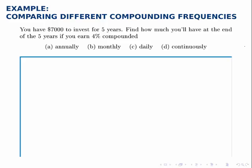In this example, we're going to compare four different accounts. Say we have $7,000 to invest for five years, and all four accounts earn the same interest rate, 4%. What we want to see is how much each account will have at the end of those five years, depending on how often the interest is compounded.